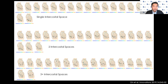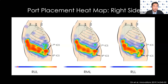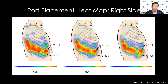To further identify common themes, we created a heat map. For the right-sided approach, we made maps for the right upper lobe, middle lobe, and lower lobe. Red indicates the most commonly chosen location and purple the least common. I drew arrows to indicate the seventh and eighth intercostal spaces.